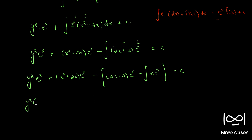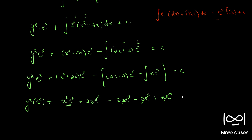Opening up the terms: x squared e^x plus 2x e^x minus 2x e^x plus 2e^x, then minus minus becomes plus 2e^x. The 2x e^x terms cancel and the 2e^x terms cancel, leaving only x squared e^x. So even applying the special case formula directly gives the integral as x squared e^x.